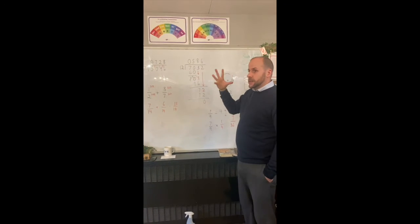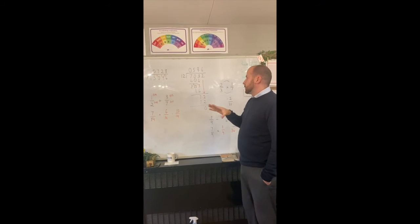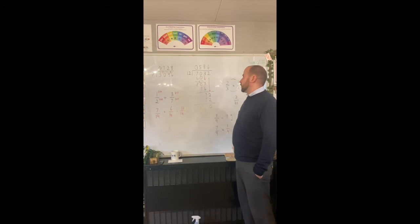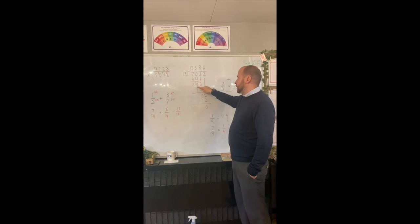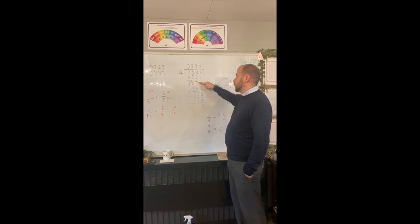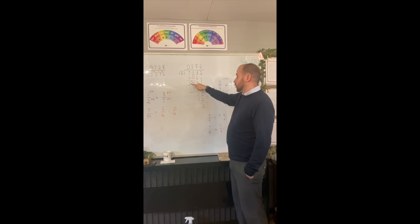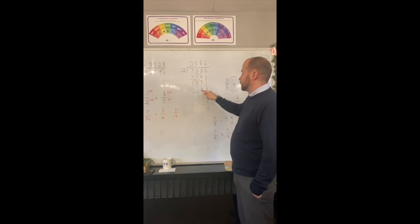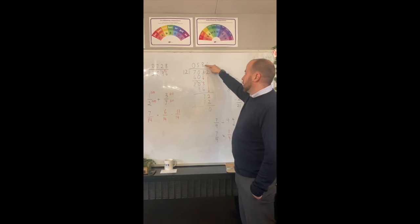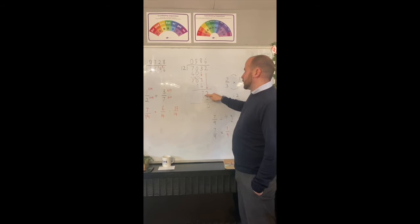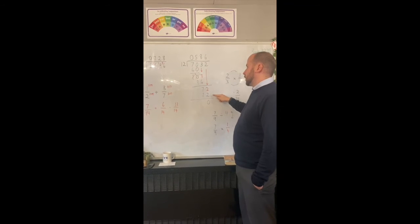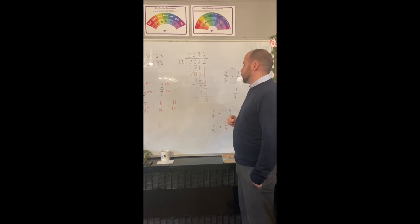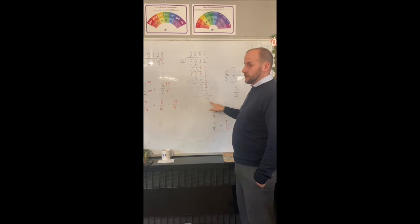With long division, we're taking chunks of the times tables away. For instance, we'd be able to take 60 away for 5 times 12. We'd be left with 10. The 3 comes down, and then from 103, we've got to take a chunk of the 12 times table - so we go 96, which is 8 times 12 - and we're left with 7. The 2 comes down and we can take 6 times 12, which is 72, which gets us down to 0.